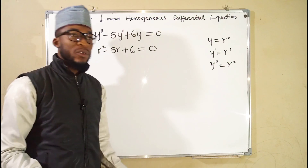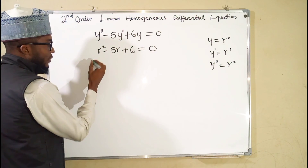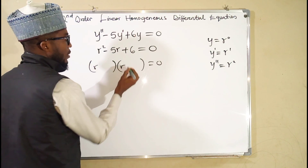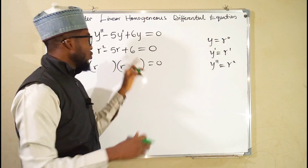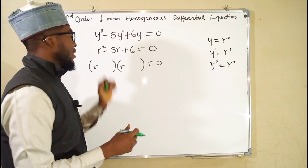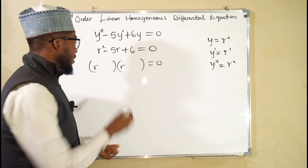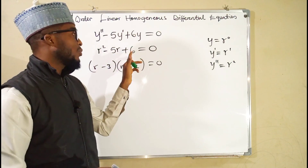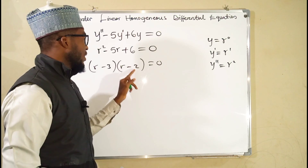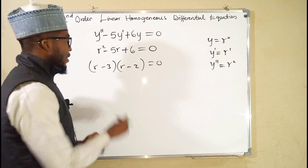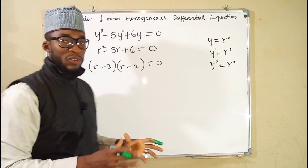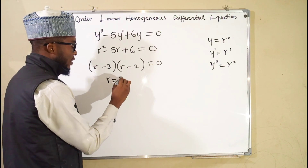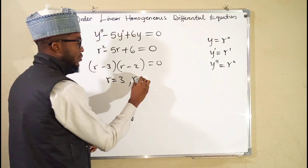This is a quadratic equation and we can solve it by factorization. Think of two numbers which when multiplied give 6 and when added give -5. The numbers are -3 and -2, because (-3) × (-2) = 6 and (-3) + (-2) = -5. Setting each factor equal to 0, the first factor gives r = 3 and the second gives r = 2.